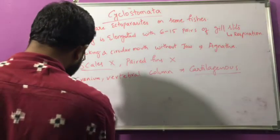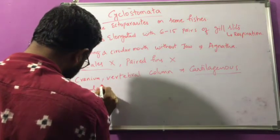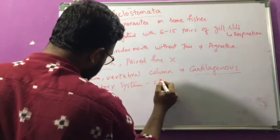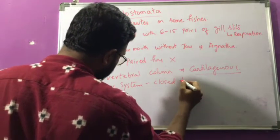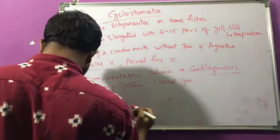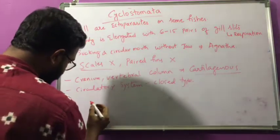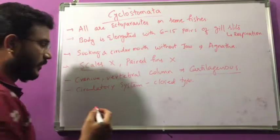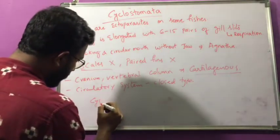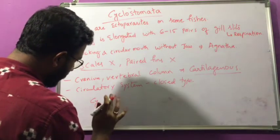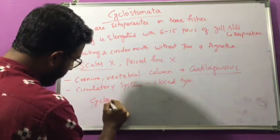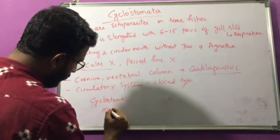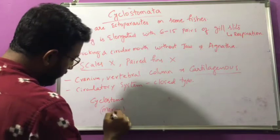The circulatory system in Cyclostomes is of the closed type. These Cyclostomes mostly belong to marine environments — they live in sea water.